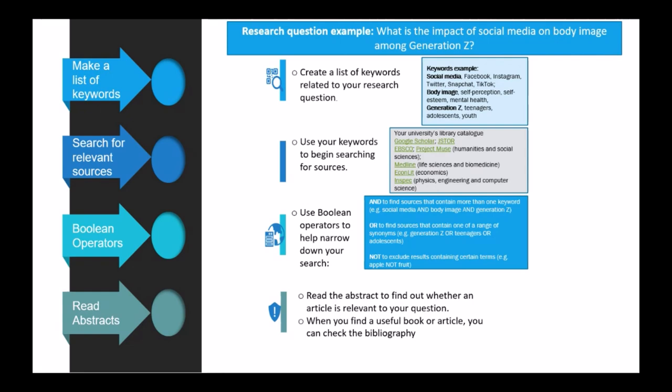Use Boolean operators to help narrow down your search. Boolean operators are AND — in capital letters — to find sources that contain more than one keyword. For example: social media AND body image AND Generation Z will give you all articles that contain those words. You can use OR to find sources that contain one of a range of synonyms — for example, Generation Z OR teenagers OR adolescents.